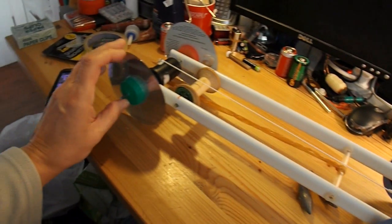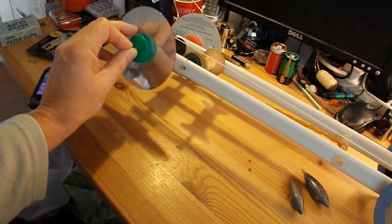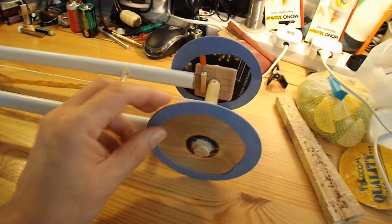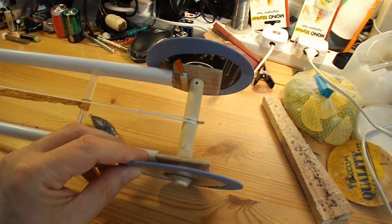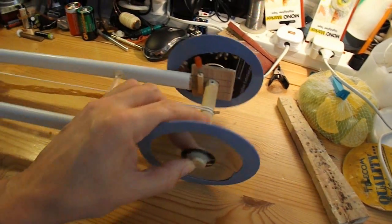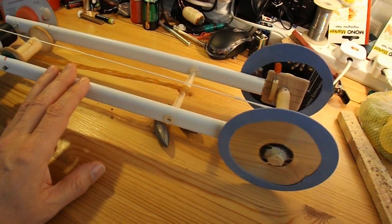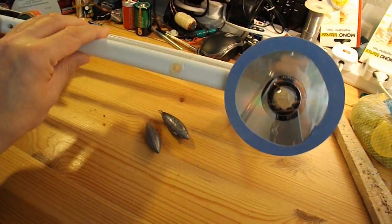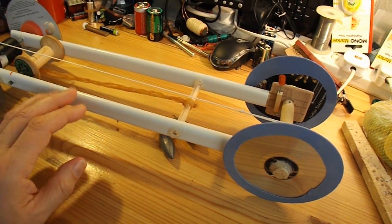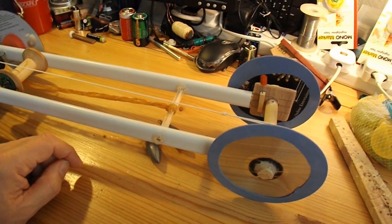So the wheels are CDs with milk bottle tops hot glued to them. The back wheels are actually CDs stuck onto a thick wooden dowel. The chassis is made out of plastic trunking as it's called. The other bits on there we don't need so I'm going to take as much of that off as I can.